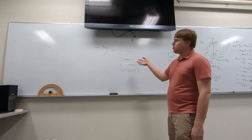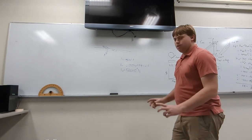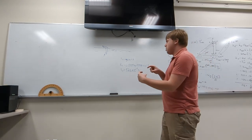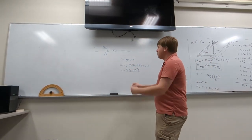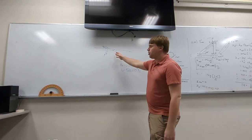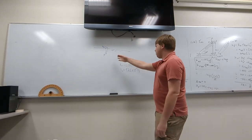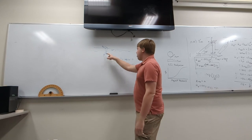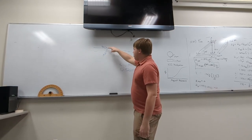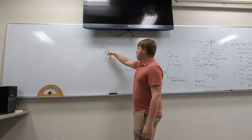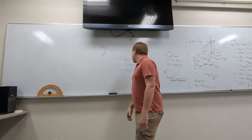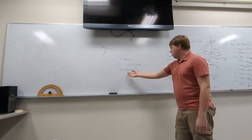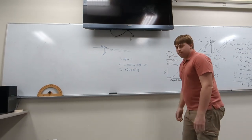We wanted to find the rolling resistance of the marble on the track, so we took the marble we intended to use and put it on a short section of track with an angle finder, then rotated it until it started moving. We found that angle to be around 1.5 degrees. We set up a force analysis with gravity pulling down, broke it into two vectors, and determined that rolling resistance equals mass times gravity times sine of 1.5 degrees.